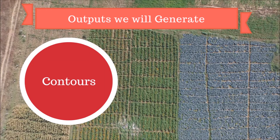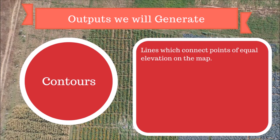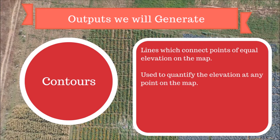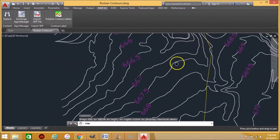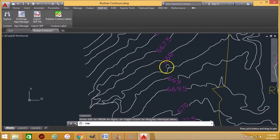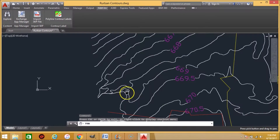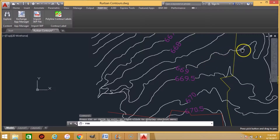So, what are contours? Contour lines are lines which connect points of equal elevation on the map. They quantify the elevation at any point on the map. Contour intervals can be chosen based on the project requirement. This is an example of what contours look like. As you can see, this entire line connects all the points of the same elevation value — 669 meters above sea level.